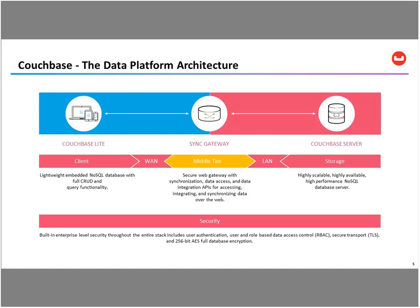Couchbase Lite gives you offline-first experiences, meaning that if connectivity is not there or it's intermittent, you can still work with your applications. Data is synced to the server through Sync Gateway, which takes care of resolving any conflicts so users get a seamless experience even on edge devices. You can build smart applications on the web as well as on mobile.